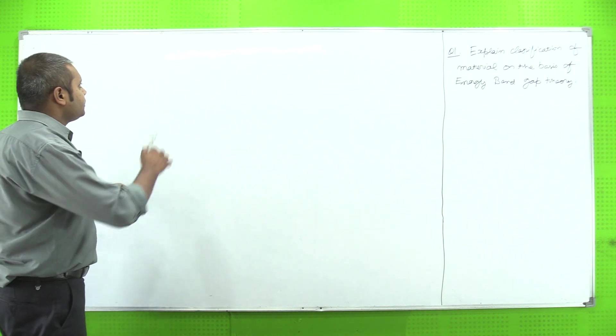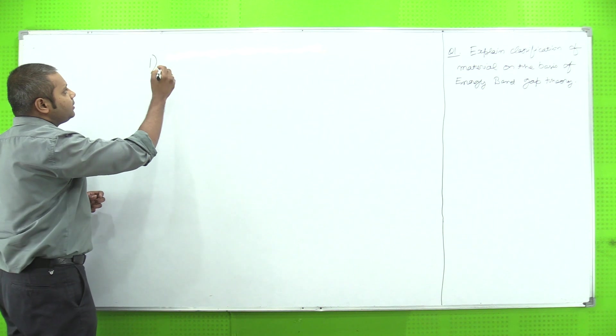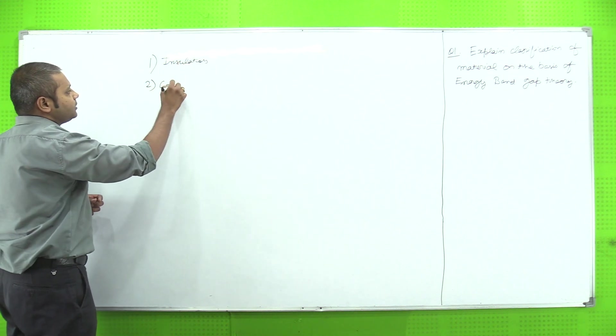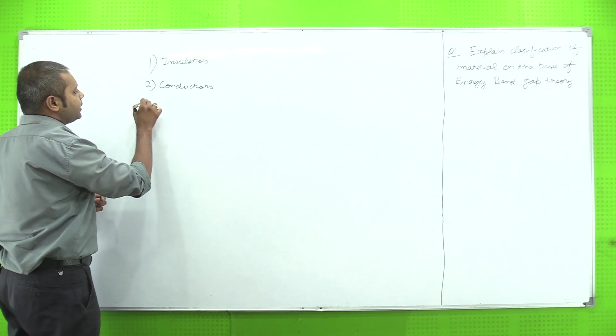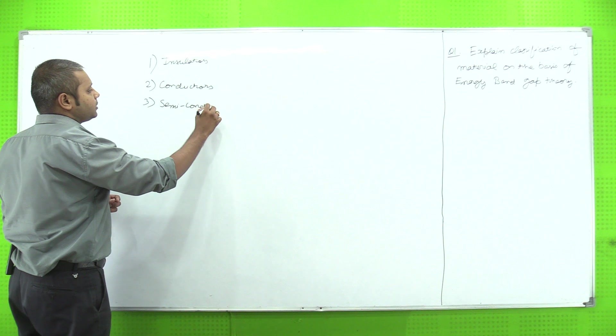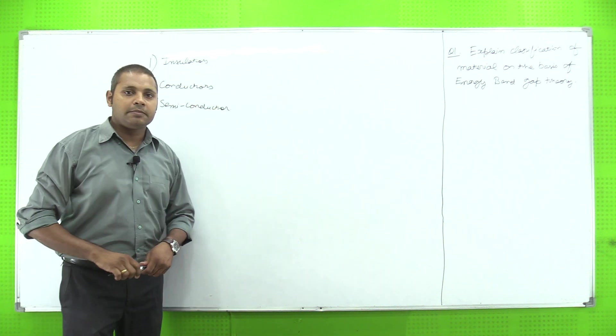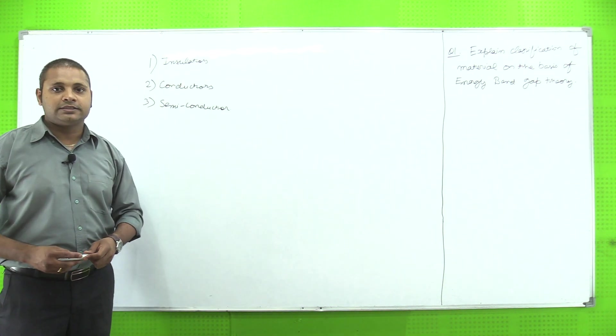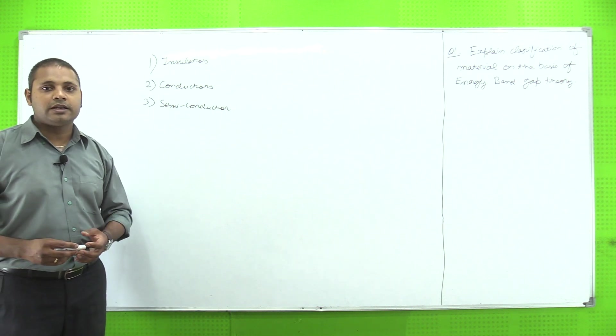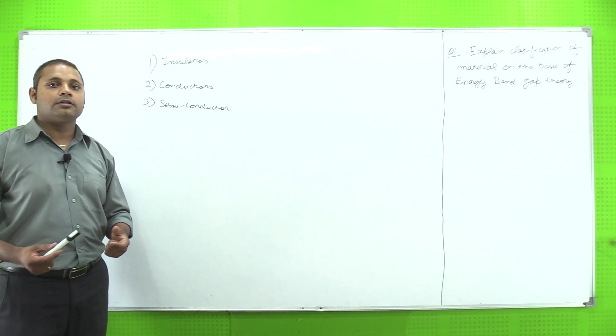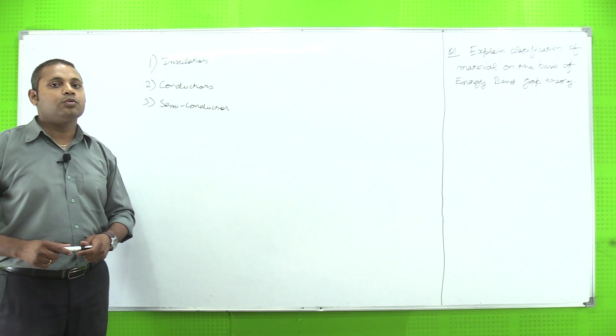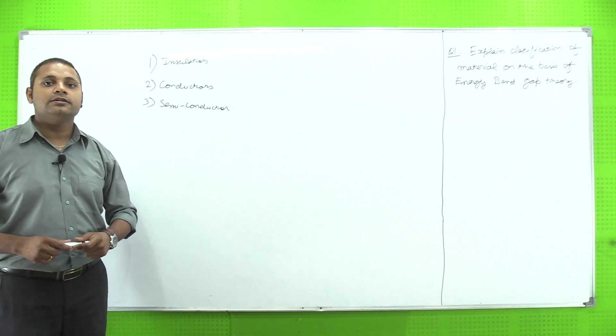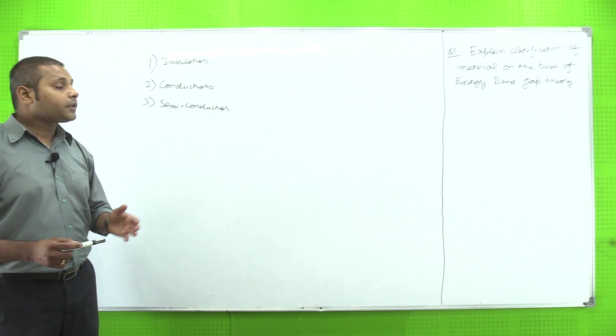Generally we know that in nature, materials are classified in three categories. First one: insulators. Second one is conductors, and third one is semiconductors. As we all know, insulators are the material which do not conduct heat and electricity. Conductors kya hote hai - the material which allow heat and electricity to conduct or pass through them.